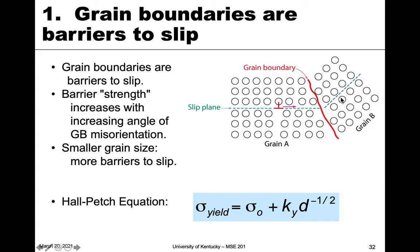Because grain boundaries are barriers to slip and plastic deformation, the barrier strength increases with increasing angle mismatch between grains. The higher the angle, the stronger the barrier. More boundaries also means a smaller grain size, so decreasing grain size increases the number of boundaries and therefore the resistance to slip.